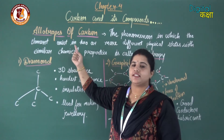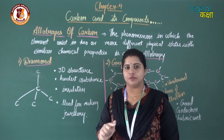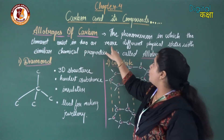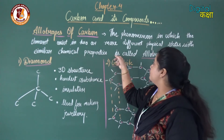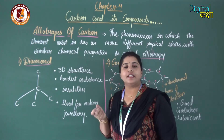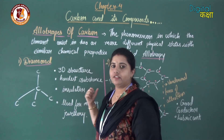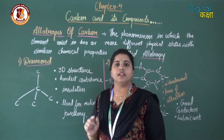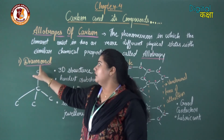The next topic is allotropes of carbon. Allotropy is the phenomenon in which an element exists in two or more different physical states with similar chemical properties. When we talk about carbon, it has three allotropes: diamond, graphite, and buckminster fullerene. These are made up of the same single element — carbon — but they have different physical properties.